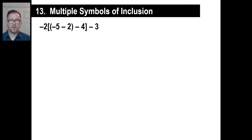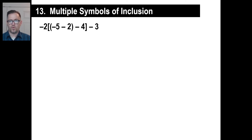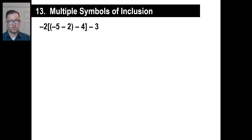We're going to take a look at multiple symbols of inclusion. Symbols of inclusion — basically parentheses, which we've dealt with. When you deal with more than one set of parentheses attacking different parts of an expression, you want to use more than one type of symbol of inclusion. You don't want two of the same parenthesis right next to each other — it gets confusing. So we'll take turns and use parentheses, brackets, fancy brackets, and so on.